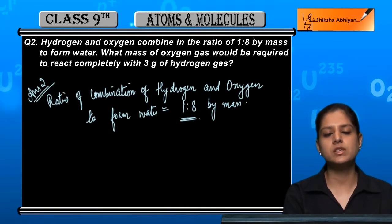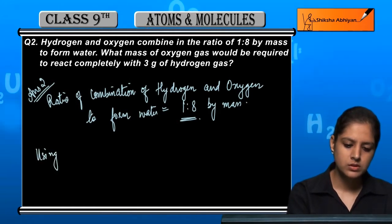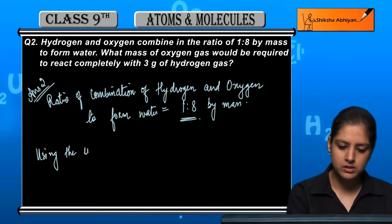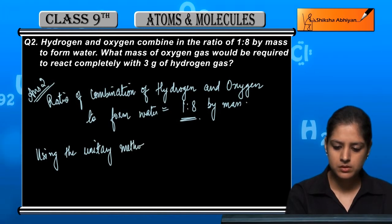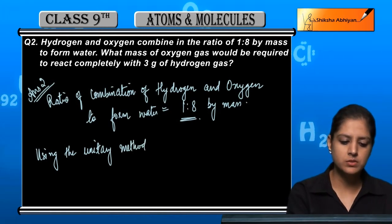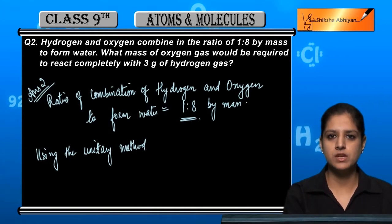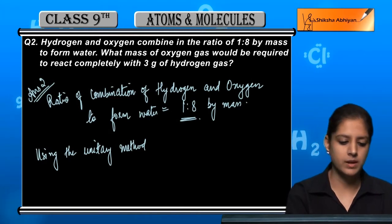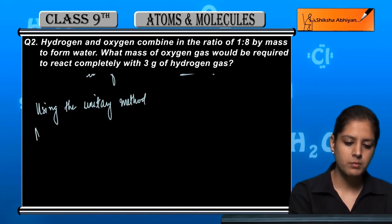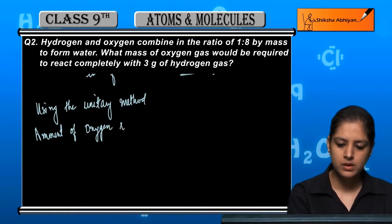Clearly oxygen gas is required, so we will use the unitary method of this proportion. Say 1 is to 8. If we have 1 gram of hydrogen, its equivalent oxygen is 8 grams. So the amount of oxygen required...